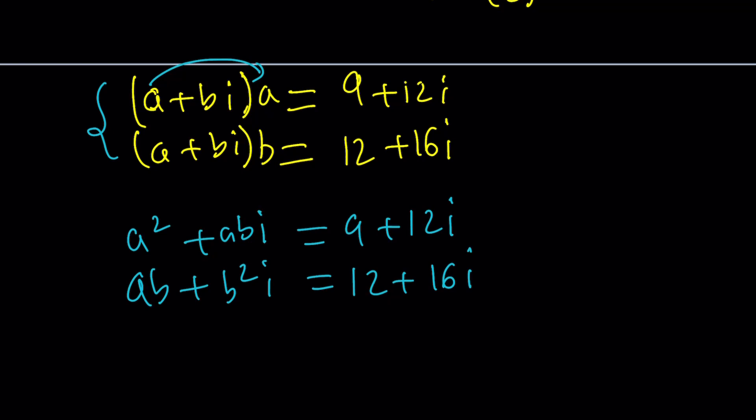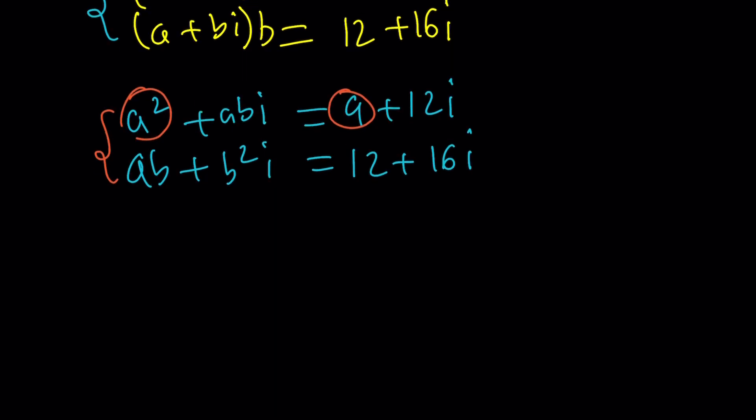Now from here, we can get the following. Set the real parts equal, A squared equals 9, that's one of the equations we get. AB equals 12, and B squared equals 16. There is no reason to repeat AB, it's the same thing.